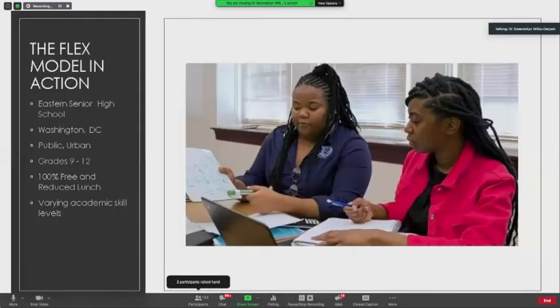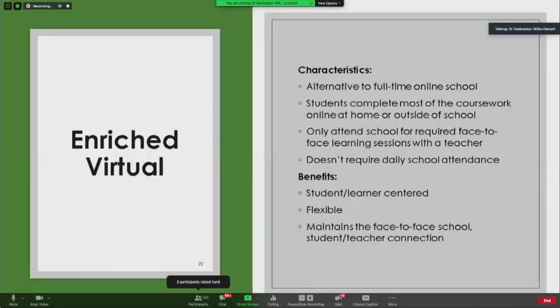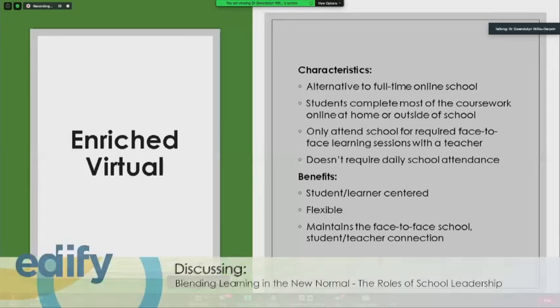The final model is enriched virtual. It's an alternative to full-time online school. It's only recommended for highly motivated independent students who can manage their time effectively and who require little supervision. It doesn't require full-time attendance at school, and they only attend school for required face-to-face sessions with teachers. It's flexible. It's student-centered, but it maintains the face-to-face school student-teacher connection.